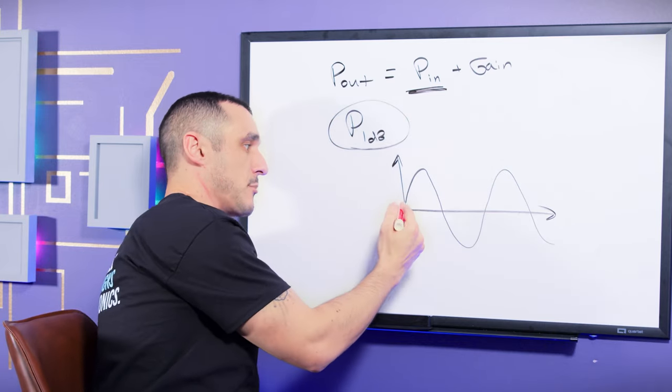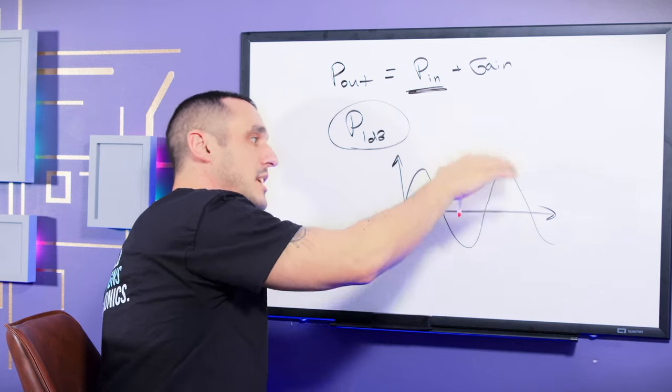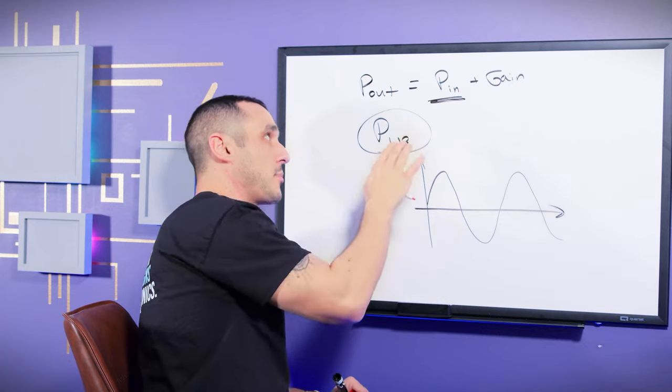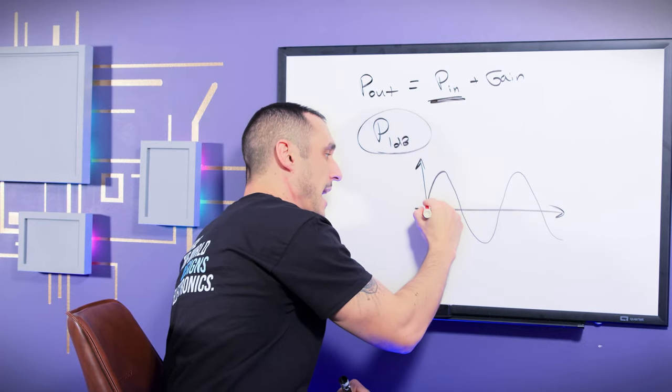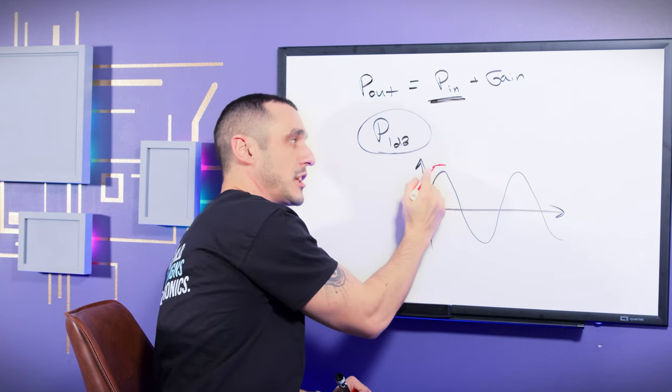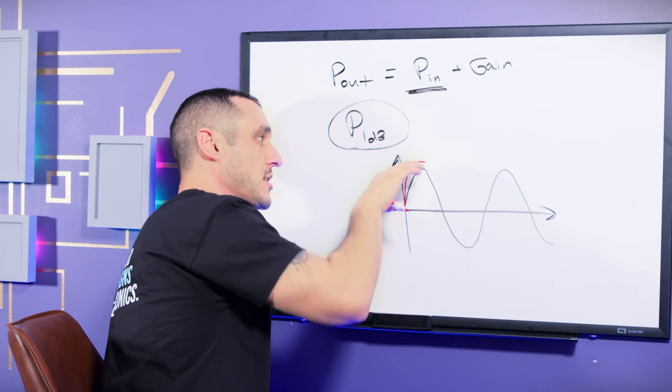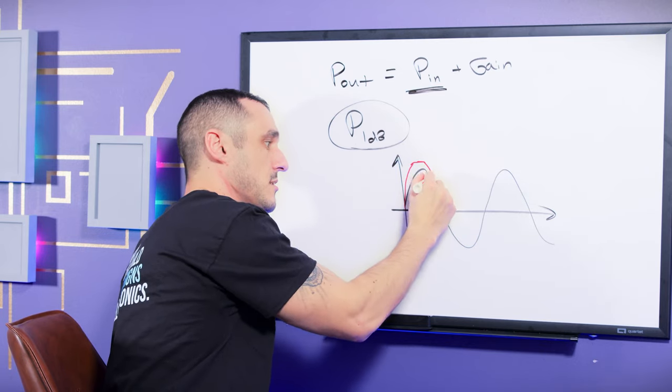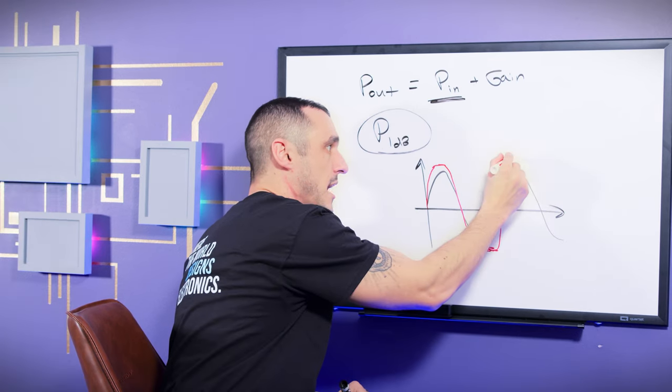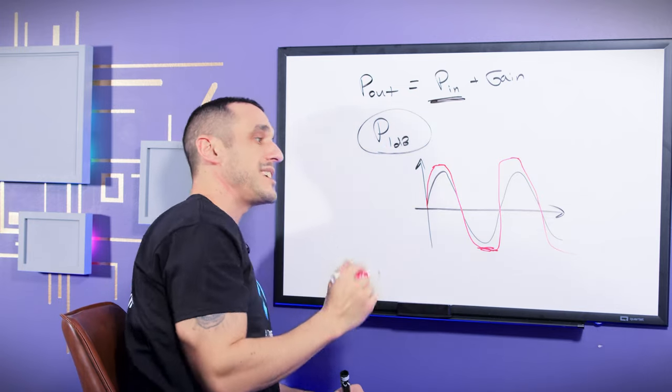So essentially what that means is the output power. So here's an example. Let's say that this is the output power for a clean sine wave from my amplifier. Eventually if I start to turn up the input power, the output power will eventually start to saturate and it will start to clip over like this. And so we call this compression, meaning the top end of the signal is compressed compared to a clean sine wave.